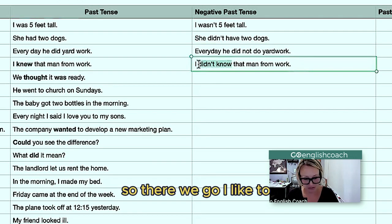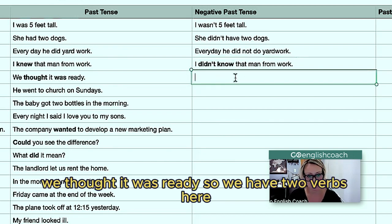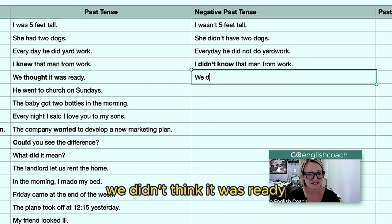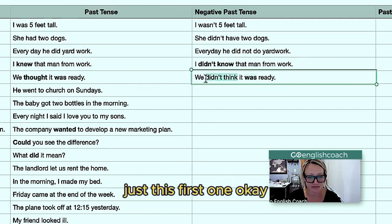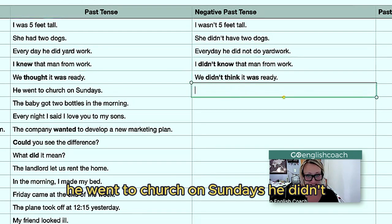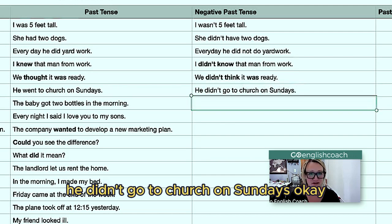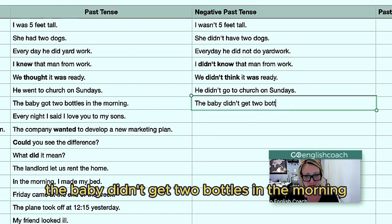So there we go. 'We thought it was ready' — 'We didn't think it was ready.' You don't need to do anything with the second verb, just the first one. 'He went to church on Sundays' — 'He didn't go to church on Sundays.' 'The baby got two bottles in the morning' — 'The baby didn't get two bottles in the morning.'